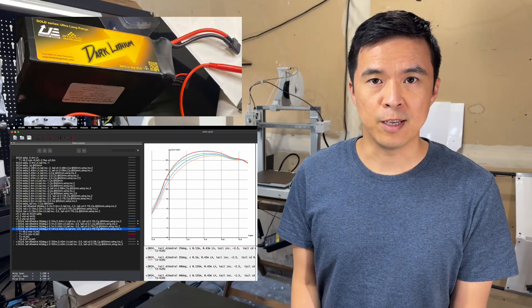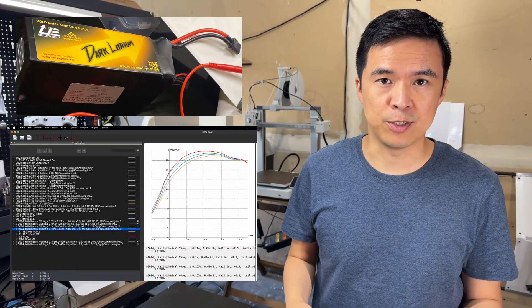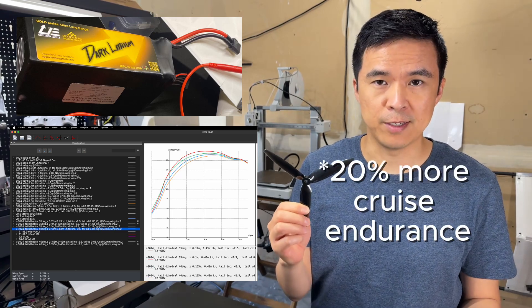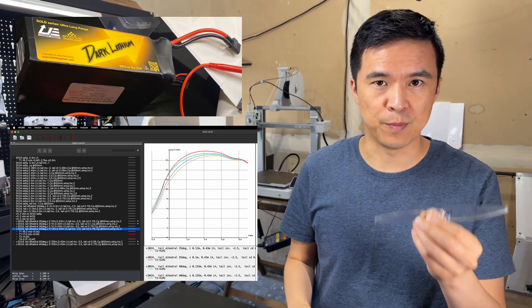High energy density battery. Aero modeling for better L over D. Improving efficiency in cruise, like switching from this 3 blade 7 inch prop to this 2 blade 7 inch prop.